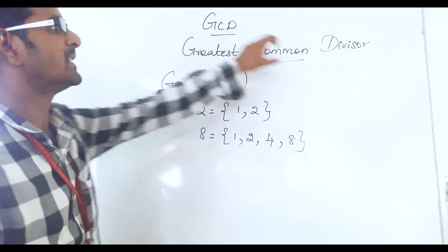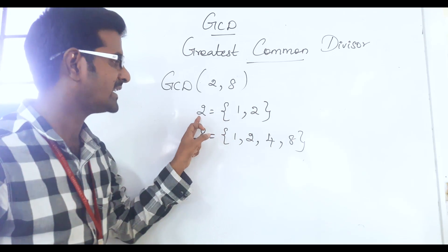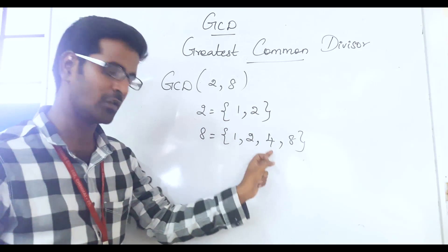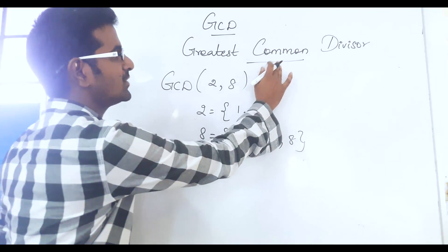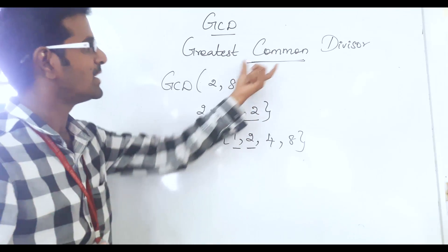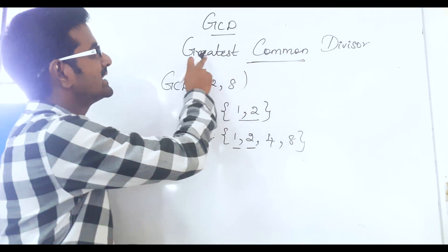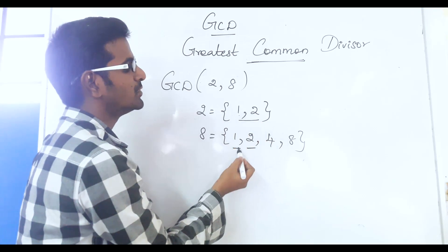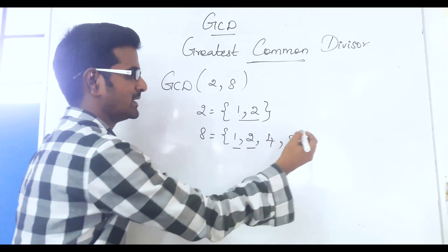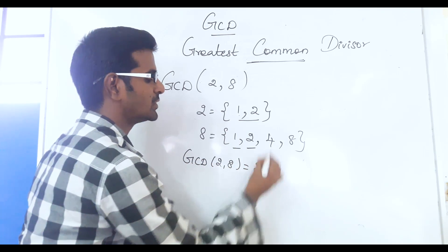We have listed out all the divisors. The divisors of 2 are 1 and 2; the divisors of 8 are 1, 2, 4, and 8. Now we will find out the common divisors — 1 and 2 are common here. Now we will find the greatest common divisor. Out of 1 and 2, which is the greatest? Obviously 2 is the greatest number. So GCD of 2, 8 is equal to 2.